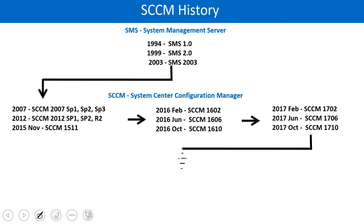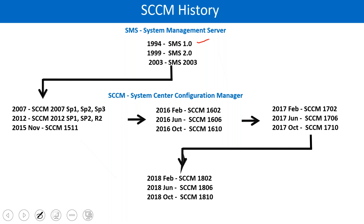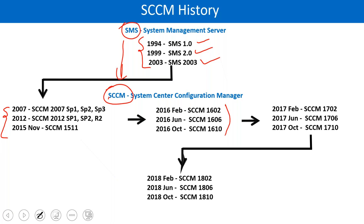Now I'll talk about historical details. SCCM started in 1994 as SMS 1.0. The previous name of SCCM was System Management Server. Then these earlier versions were released. Later on, Microsoft changed from SMS to SCCM, and then they released SCCM 2007, SCCM 2012, SCCM 1511, and versions 16.02, 16.06, 16.10, which released in the year 2016.